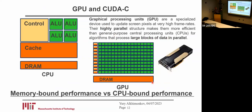Here is the conceptual representation of a CPU — there are four cores, and each core is quite powerful. And on the right, you can see a conceptual representation of a GPU.